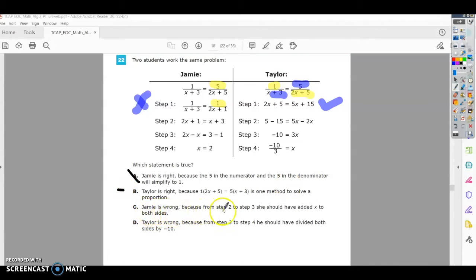It says Jamie is wrong because in steps 2 and 3, she should have added x to both sides. Okay, I didn't even make it down to steps 2 and 3 yet. Let me look at step two.